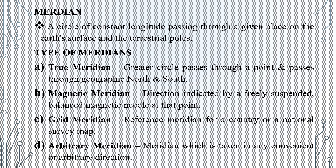Next, we will look at Meridian. A meridian is a circle of constant longitude passing through a given place on the surface and the terrestrial poles. We will look at the types of Meridian.